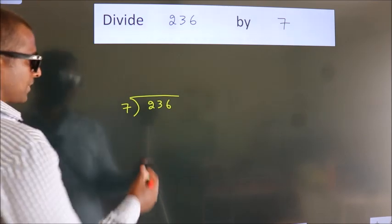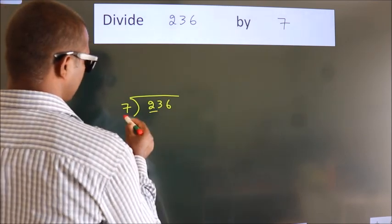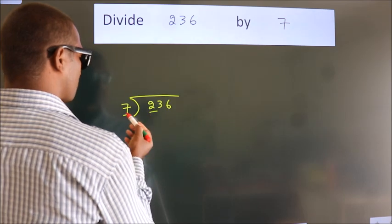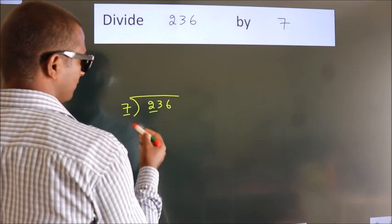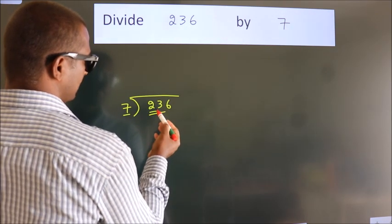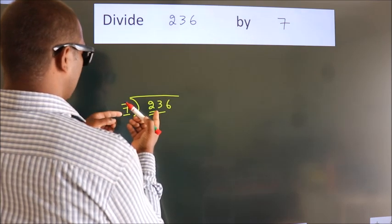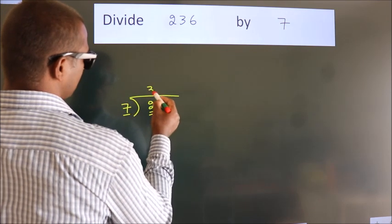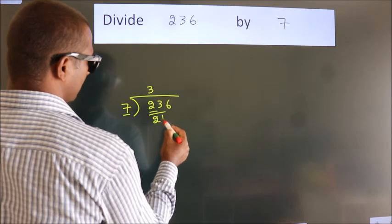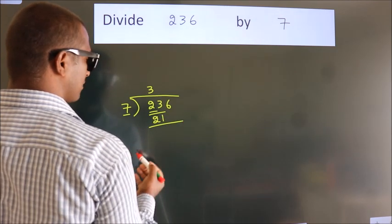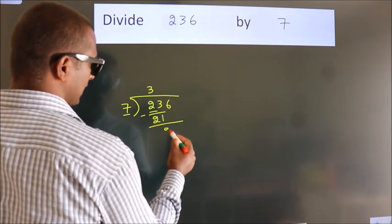Next, here we have 2. Here 7. 2 is smaller than 7, so we should take 2 numbers: 23. A number close to 23 in the 7 table is 7 threes, 21. Now we subtract. We get 2.